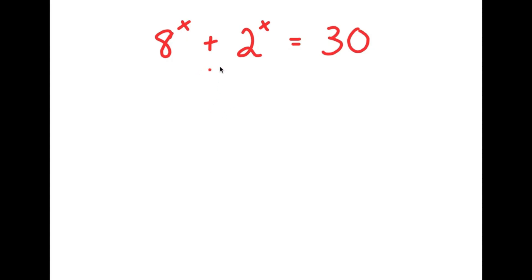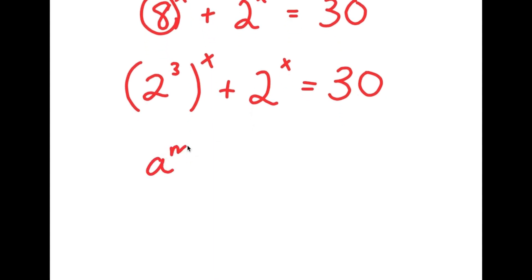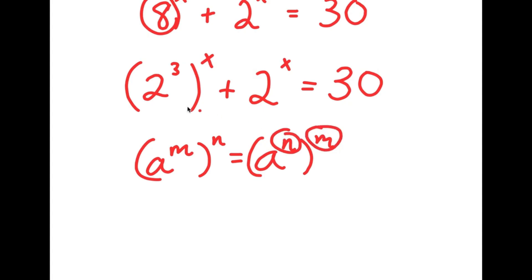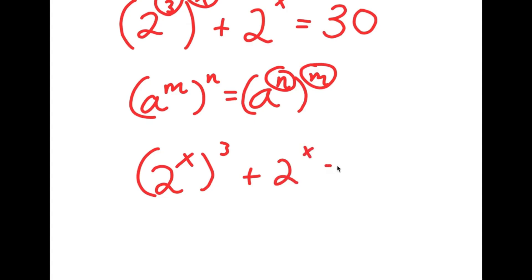So in this problem I have 8 to the power of x plus 2 to the power of x is equal to 30. I'm going to start by rewriting 8 as 2 to the power of 3. So now I have (2 to the power of 3) to the power of x plus 2 to the power of x is equal to 30. Now, if I have a to the power of m to the power of n, this is the same thing as a to the power of n to the power of m. So I can switch the places of 3 and x, giving me (2 to the power of x) to the power of 3 plus 2 to the power of x is equal to 30.